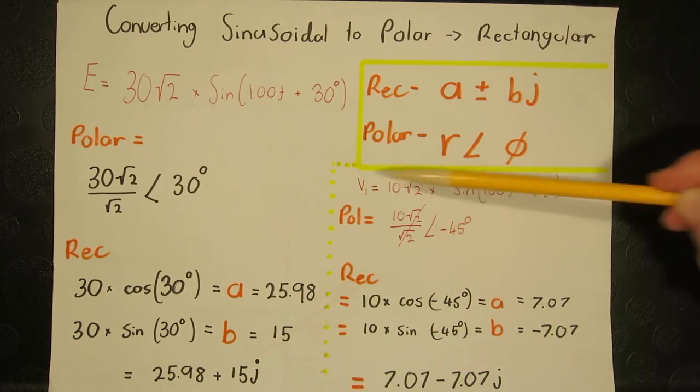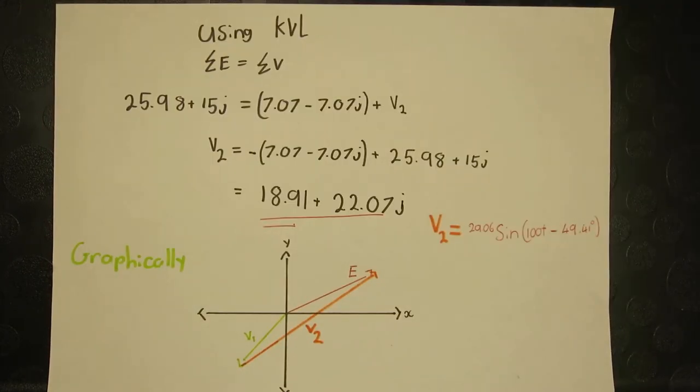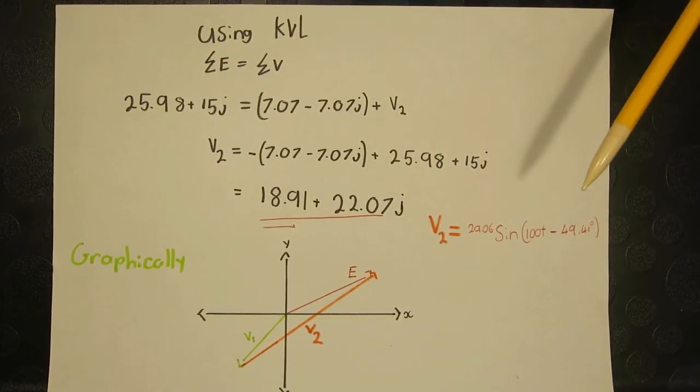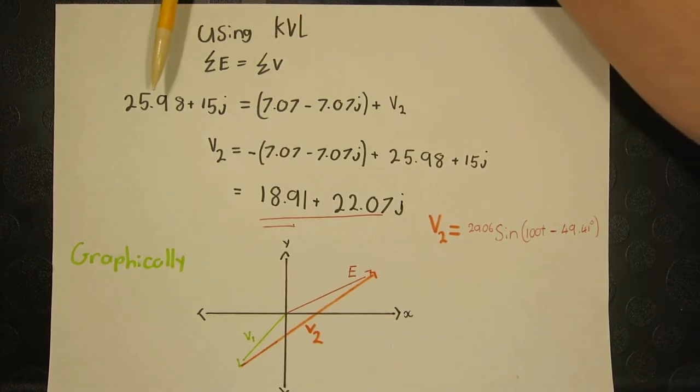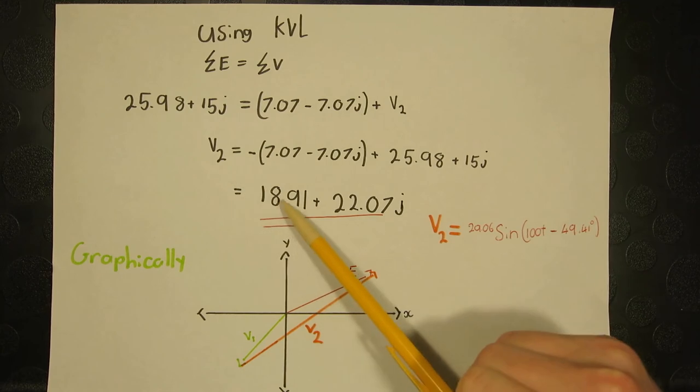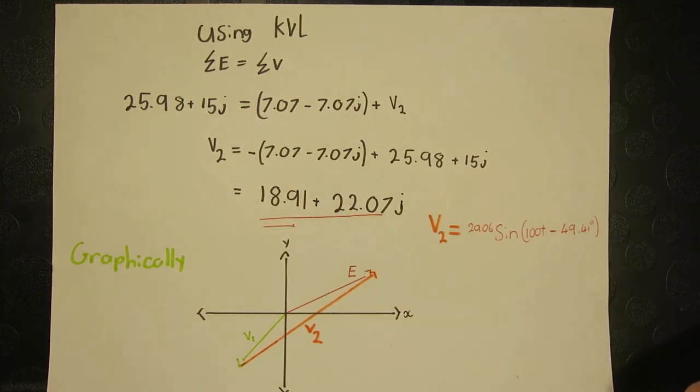Doing the same process for V1 yields this value here. Now, with both in rectangular form, we can undergo KVL calculations. With 25.98, the two real values being added together, and the two imaginary values equaling together. At the end, we get V2 equals 18.91 plus 22.07J. Thank you for watching.